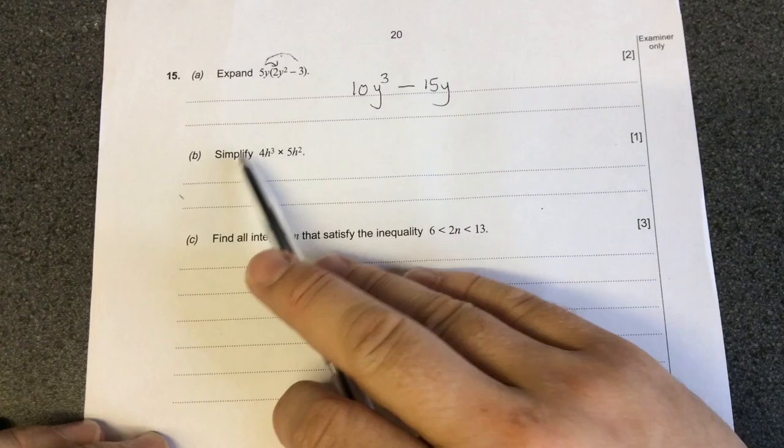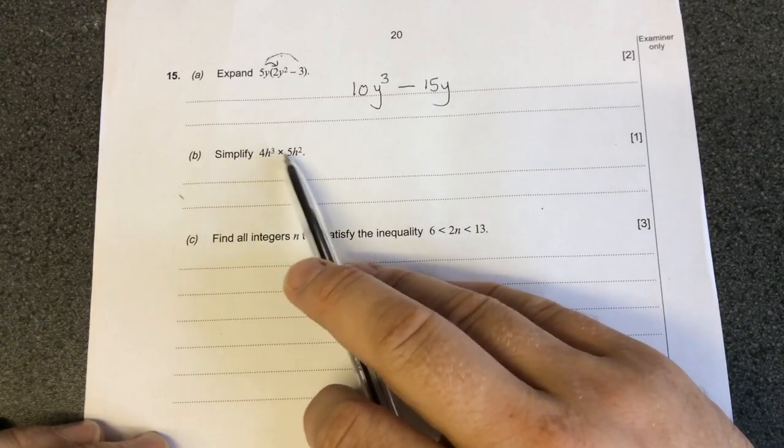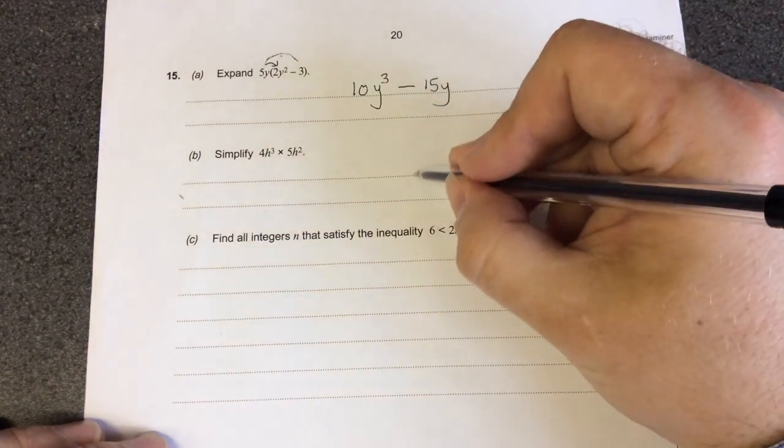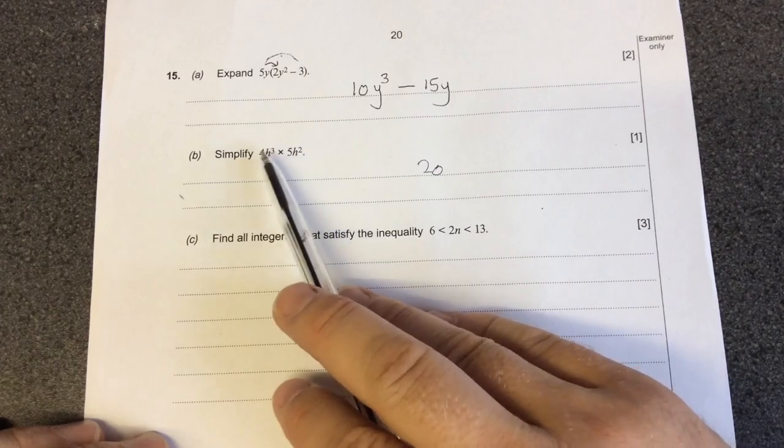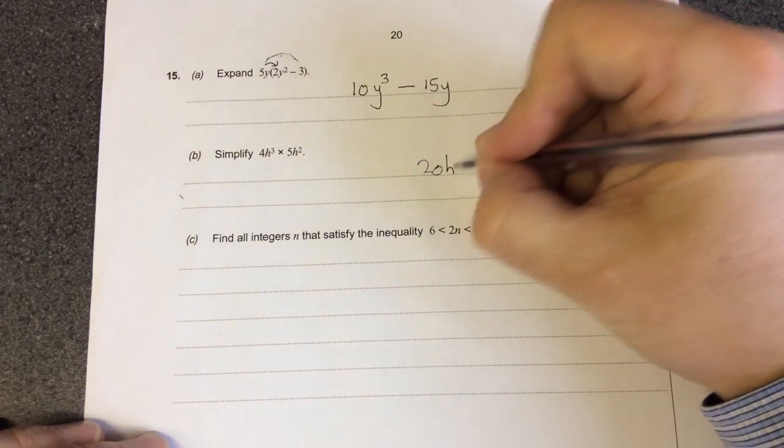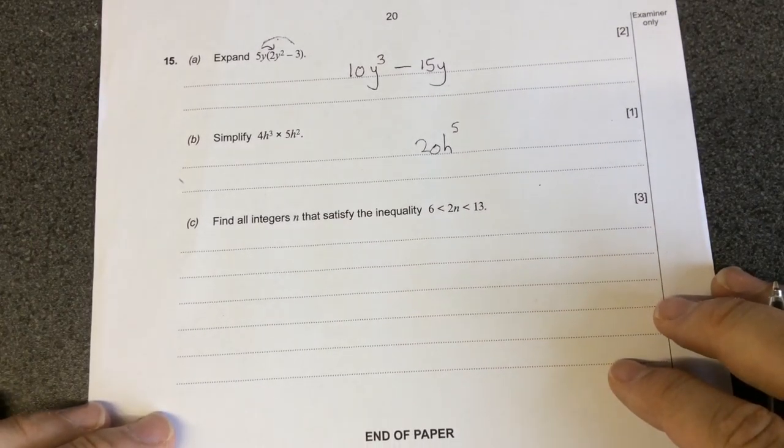When you simplify here you multiply the ordinary numbers as you would with times tables. So 4 times 5 is 20. But as I said in the previous example when you multiply the indices you add the power. So 3 add 2 makes 5. So the answer is h to the 5.